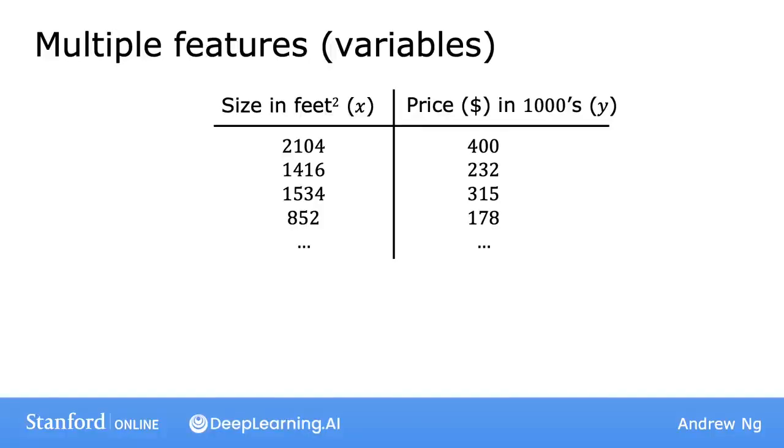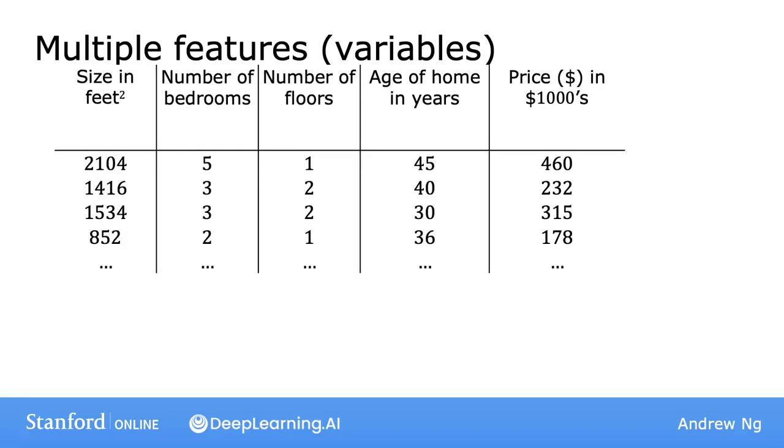In the original version of linear regression, you had a single feature x, the size of the house, and you're able to predict y, the price of the house. So the model was f_w,b of x equals wx plus b. But now, what if you did not only have the size of the house as a feature with which to try to predict the price? But if you also knew the number of bedrooms, the number of floors, and the age of the home in years, it seems like this would give you a lot more information with which to predict the price.